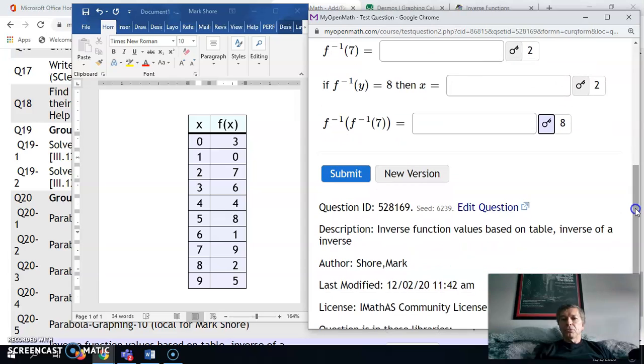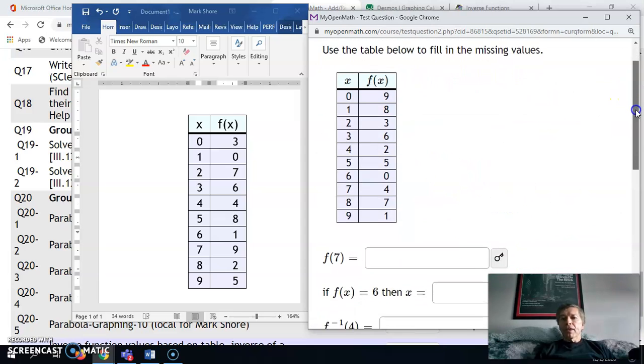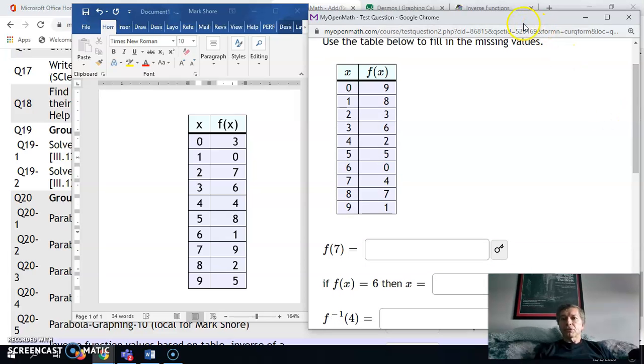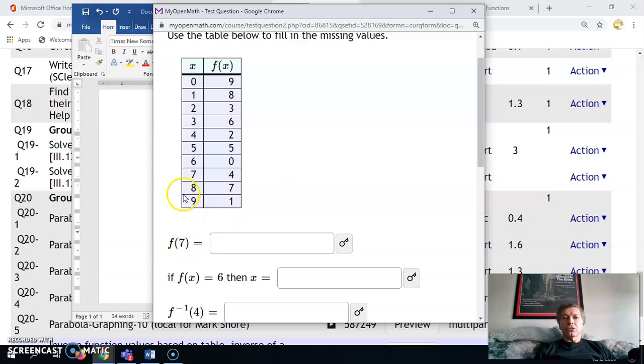Okay, let's try a new version of this problem. Here's my table. The first one says, what is f(7)? This is going from left to right. f(7), when x is 7, we get 4.